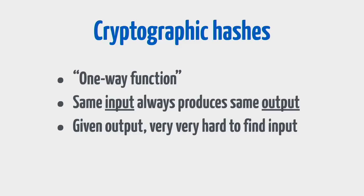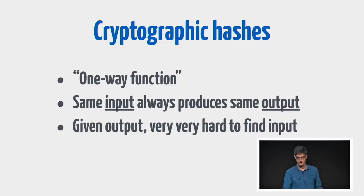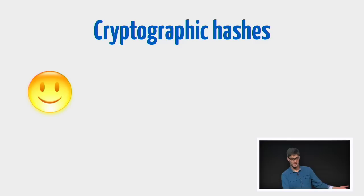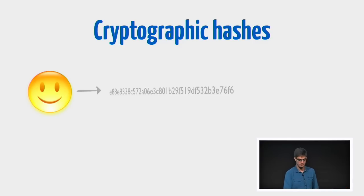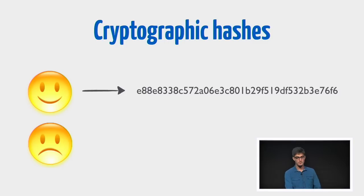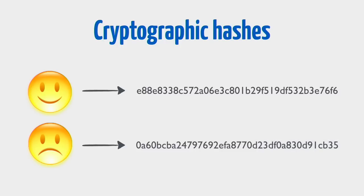Let's quickly review cryptographic hashes, because this is how we verify we're getting the correct data. It's basically a one-way function where the same input always produces the same output, and given an output it's really hard to find what input produced it. So when we're trying to download a file and we ask a peer for a piece — we're expecting a happy face — we know what the hash of that is. If some malicious peer on the network sends us the wrong data, like a sad face with manipulated content, when we hash it it's going to turn into something different, and we'll know to throw it away and mark that peer as untrustworthy.